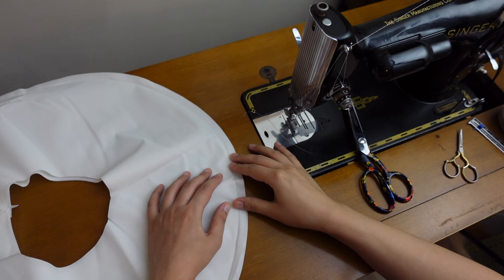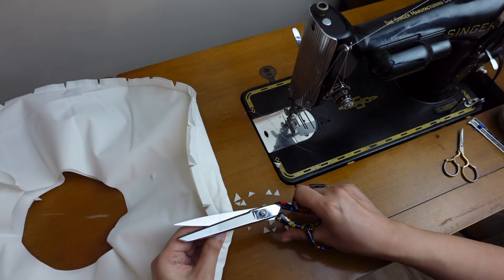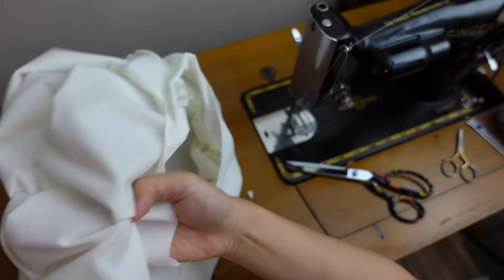Cut out small V-shapes from the seam allowance to reduce bulk.